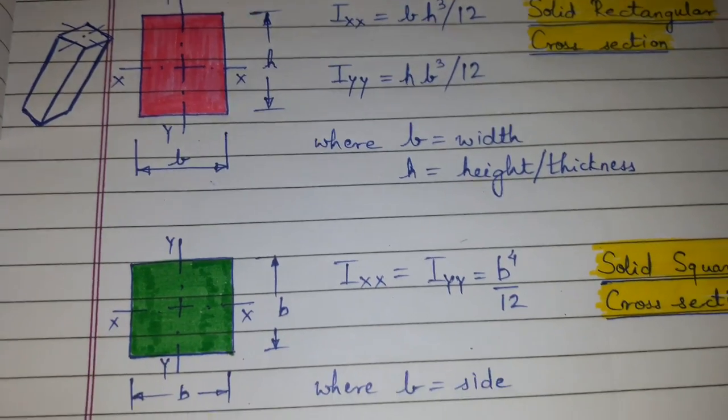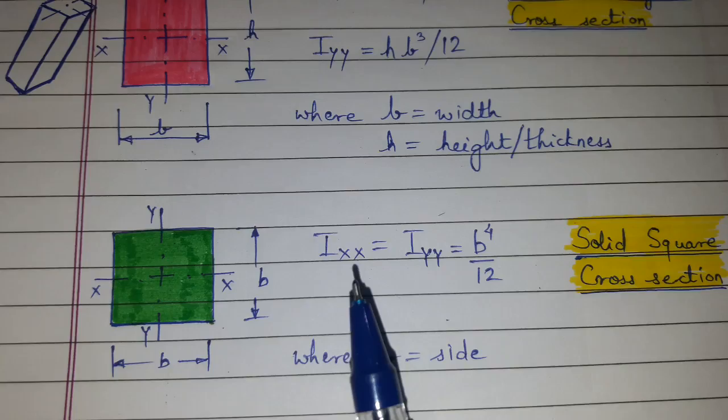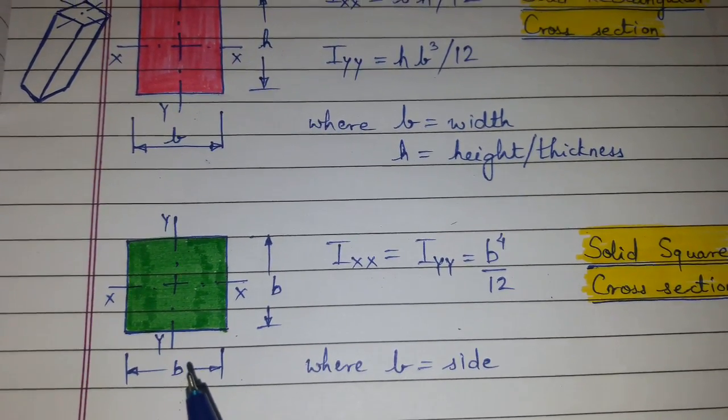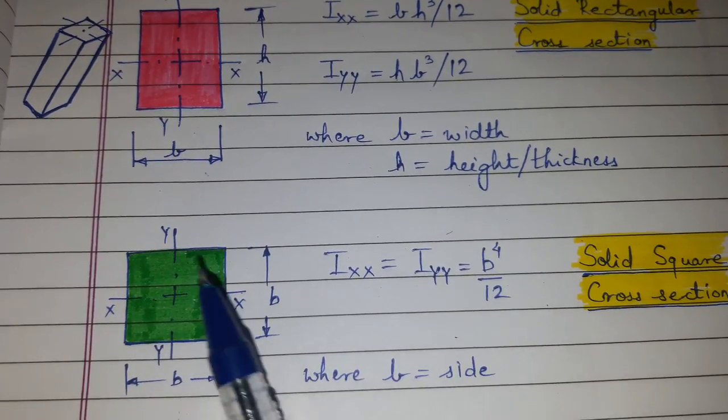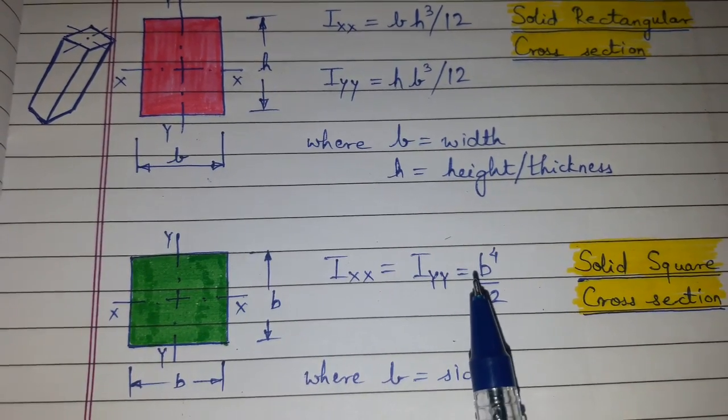Similarly for solid square cross-section, here the side is h and b is equal since it is a square. So Ixx equal to Iyy equal to b raised to 4 divided by 12, where b is the side.